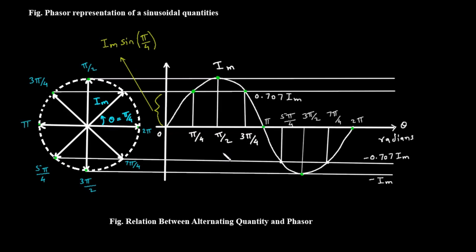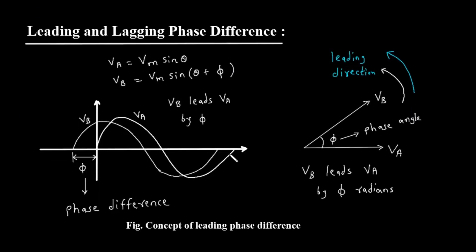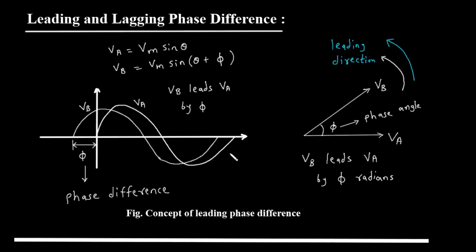Now that we understand what a phasor is, let's use it to understand a key concept in AC circuits: phase difference. This brings us to the section on leading and lagging phase difference. In many AC circuits, the voltage and current waves don't peak at the same time. One can be ahead of the other, which we call leading, or behind the other, which we call lagging. First, let's look at the concept of leading phase difference. The diagram shows two sine waves on a graph, labeled VA and VB. Notice that the wave VB reaches its peak and crosses the zero axis before the wave VA does. The horizontal distance between the corresponding points on these two waves is the phase difference, represented by the Greek letter phi. Because VB happens earlier in time, we say that VB leads VA.